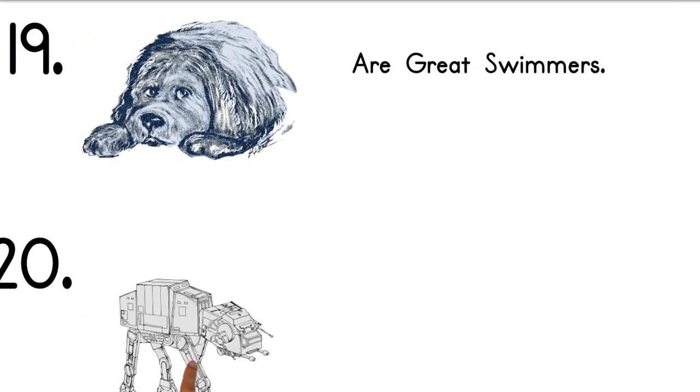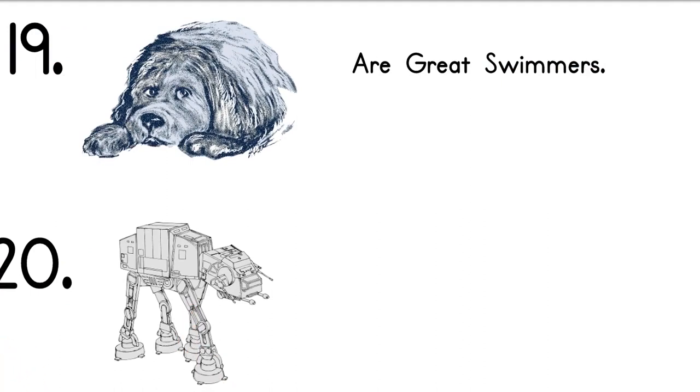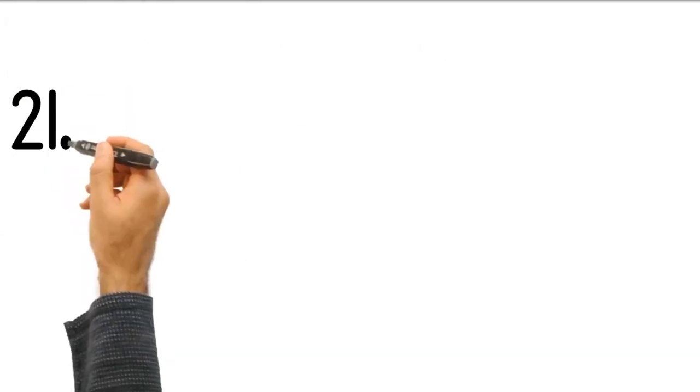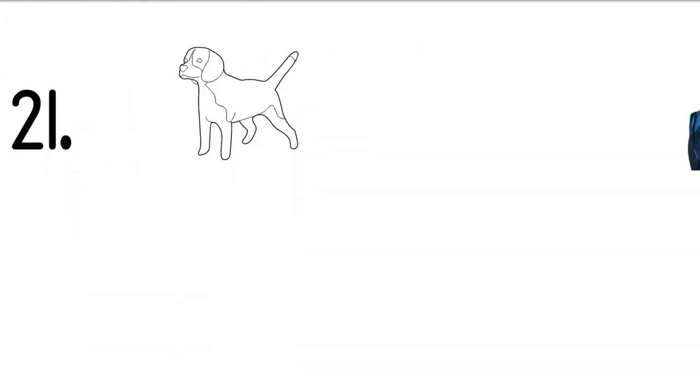20. Ewok from Star Wars was modeled from the family dog of George Lucas. The creation of the Ewoks was made from the image of a Griffin Bruxellois, which was a dog George Lucas owned. 21. Dogs are intelligent as a two-year-old child.